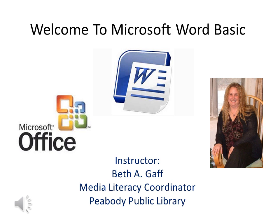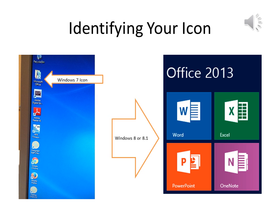Welcome to Microsoft Word Basic. The first thing I want to talk about is being able to identify your icon. Whether you have Windows 7, Windows 8, or Windows 8.1, the program is the same — you just need to locate it on your system. On the left of the screen you can see the Windows 7 icon, and on the right the Windows 8 or 8.1 icon, which looks quite different. Most newer computers come with the Windows 8.1 version.